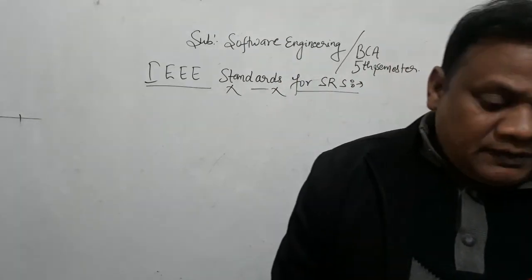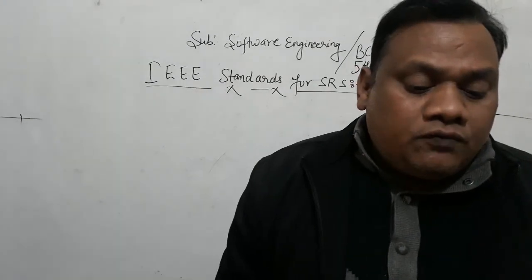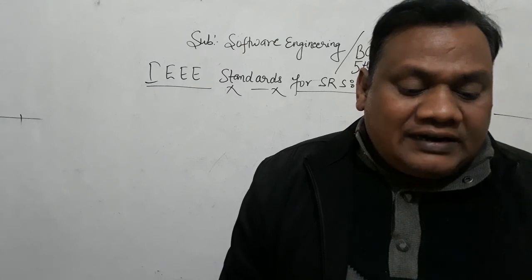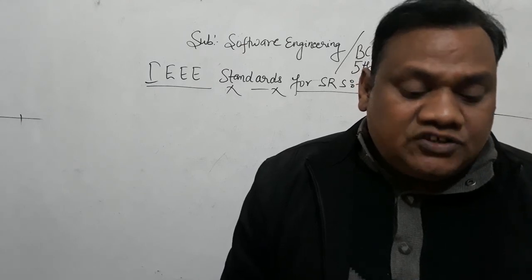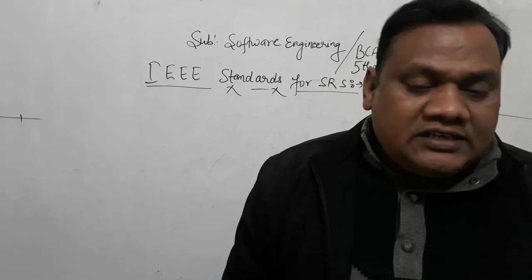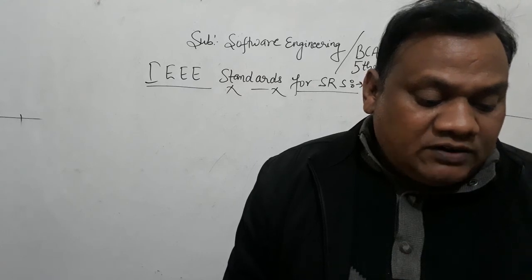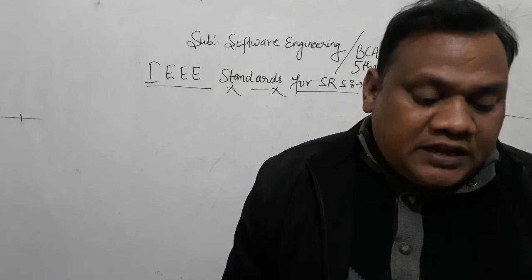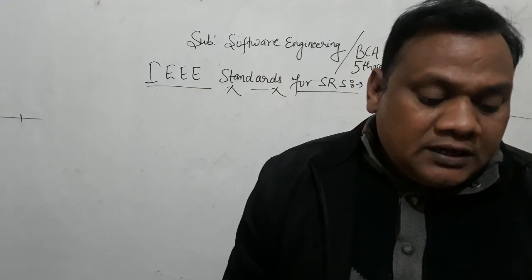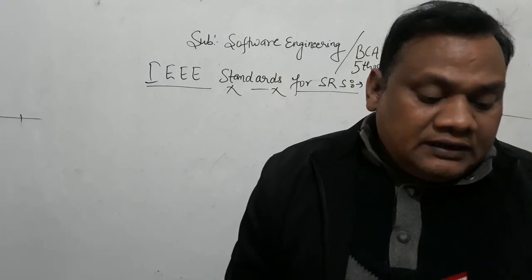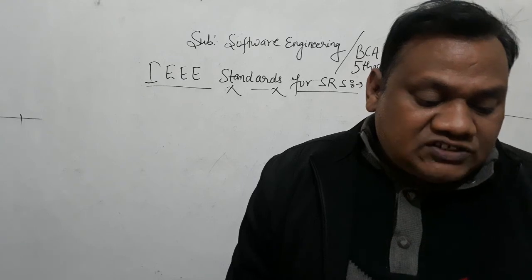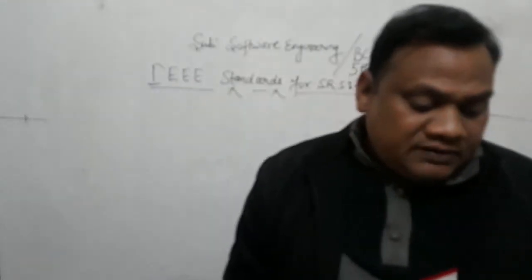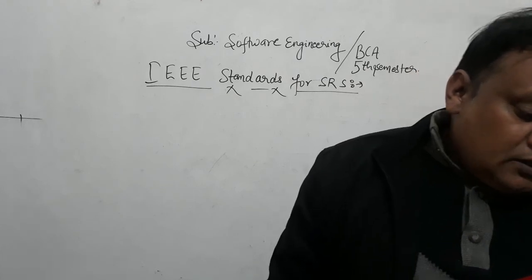Now, students, let us talk about IEEE. IEEE means the Institute of Electrical and Electronics Engineers. A software requirements specification is a requirements specification for a software system — a complete description of the behavior of a system to be developed — and may include a set of use cases that describe interactions the user will have with the software.